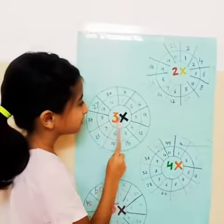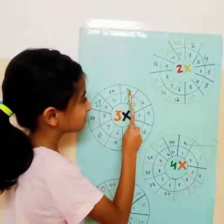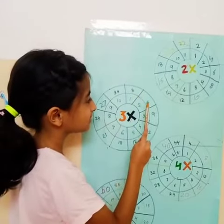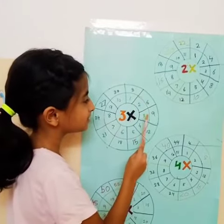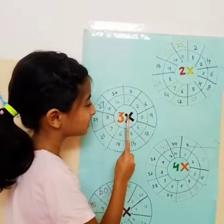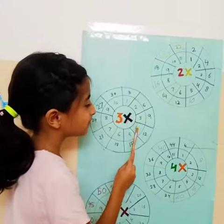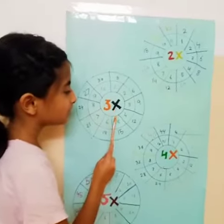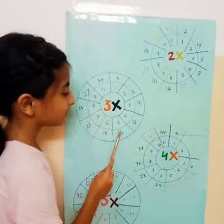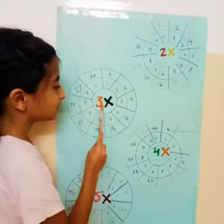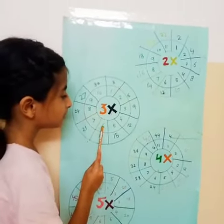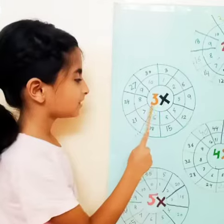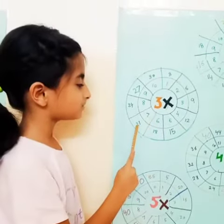3 1's are 3, 3 2's are 6, 3 3's are 9, 3 4's are 12, 3 5's are 15, 3 6's are 18, 3 7's are 21.